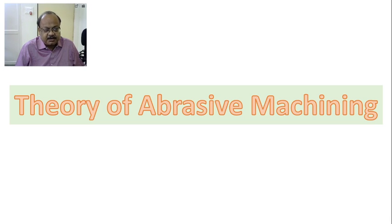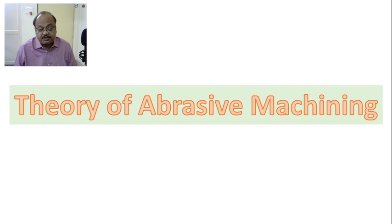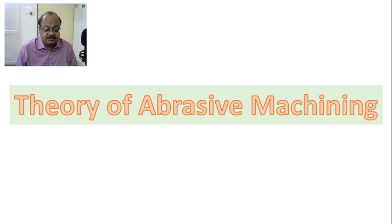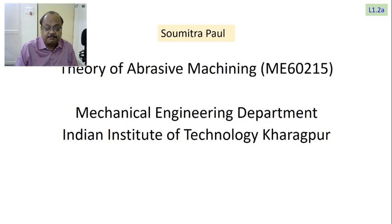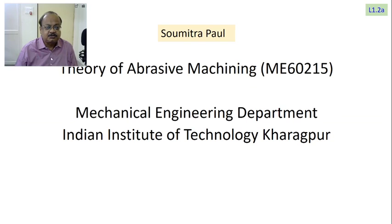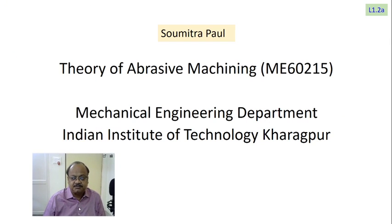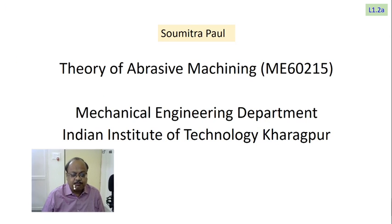We have only come across one grinding process till now, which is surface grinding. In the course of the deliberation, maybe after a week or so, we will learn about other grinding processes and how to estimate the material removal rate in them. This is Shomitropal. This is part of the theory of abrasive machining course. This is lecture number 1.2a.